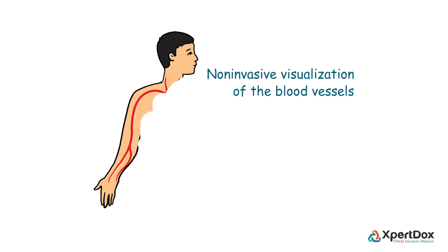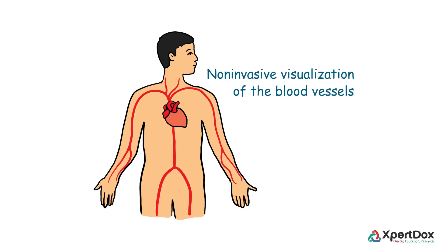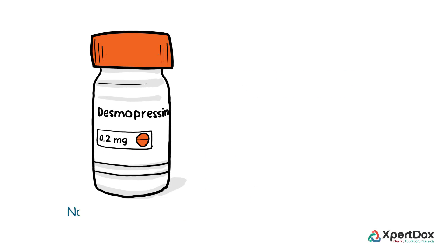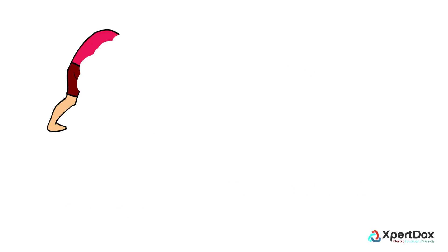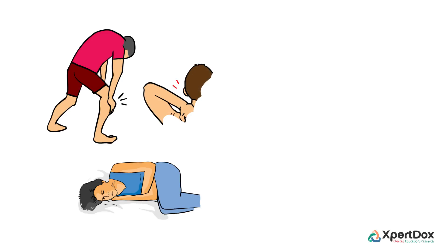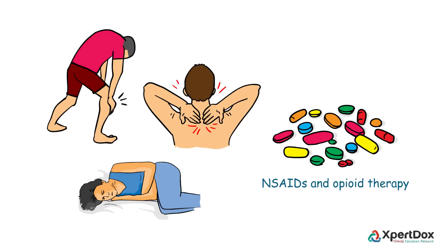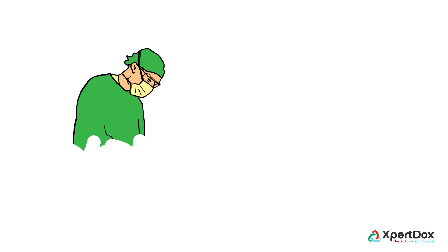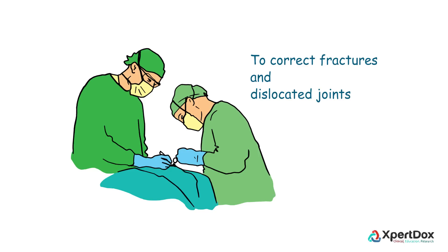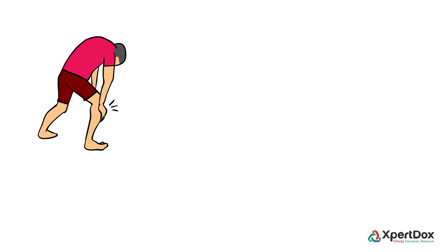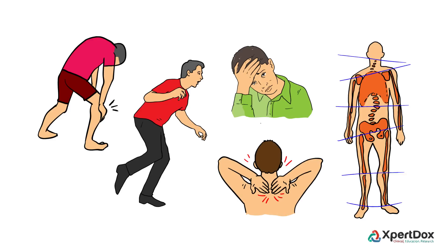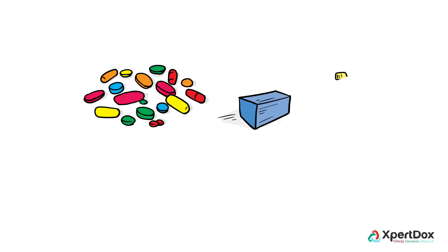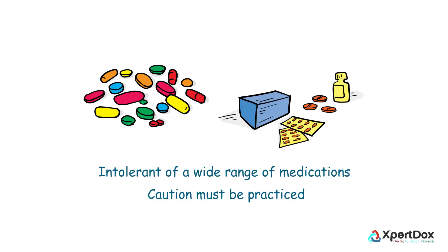Non-invasive visualization of the blood vessels may be indicated in patients who are at substantial risk of internal bleeding. Desmopressin may help to normalize bleeding time for these patients, but further studies are needed to establish the efficacy and safety profile of this medication. Long-term pain in Ehlers-Danlos Syndrome appears early and may be severe, necessitating high-dose NSAIDs and opioid therapy. Orthopedic surgery may be indicated to correct fractures and dislocated joints. Apart from pain control, management of fatigue, clumsiness, dystonia, and impaired proprioception are essential. Patients with EDS are famously intolerant of a wide range of medications, so caution must be practiced.